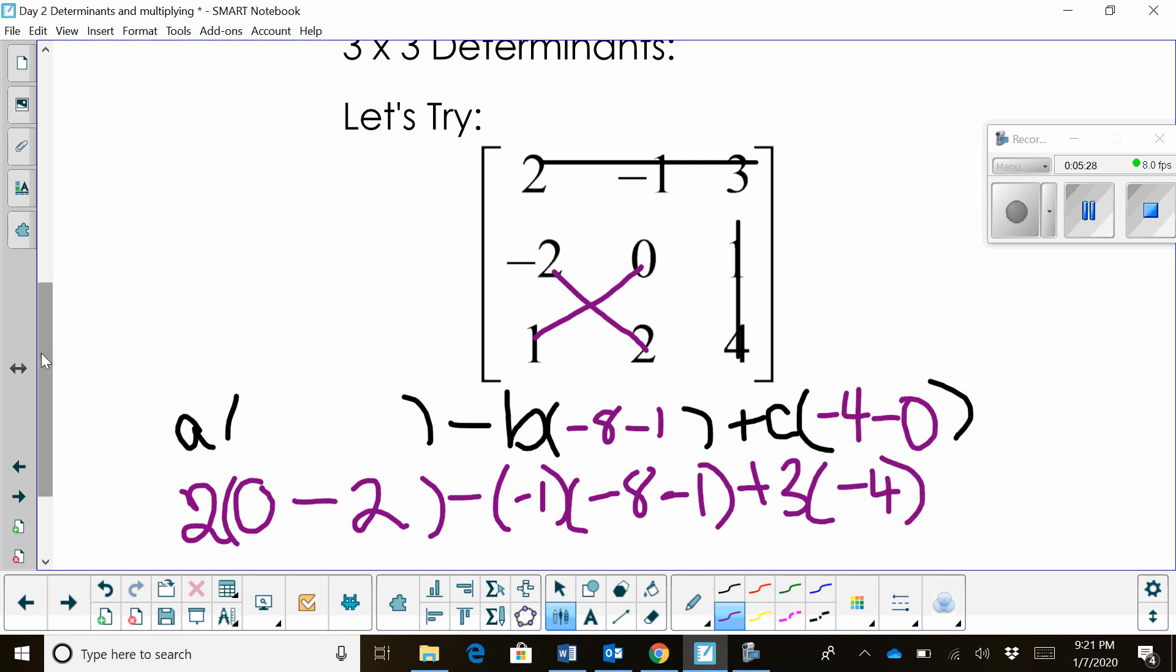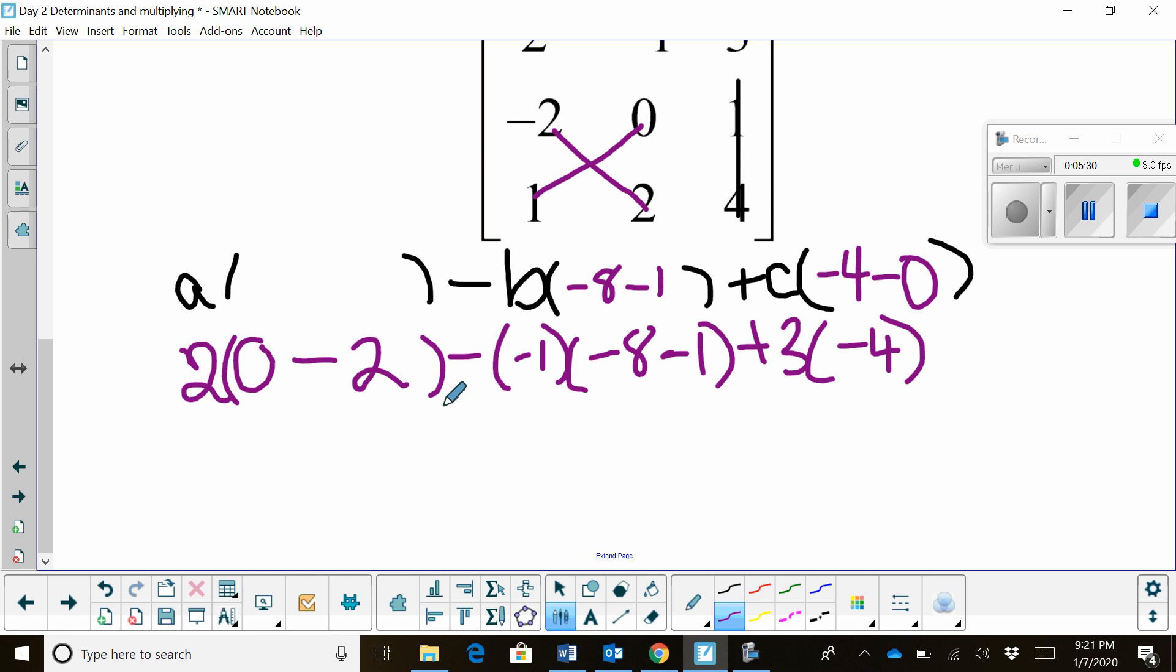And I can simplify this. Now I just have to use the order of operations. So I've got 2 times negative 2, which is negative 4. The double negative here becomes a positive. So I've just got 1 times 8 minus 1, which is negative 9.